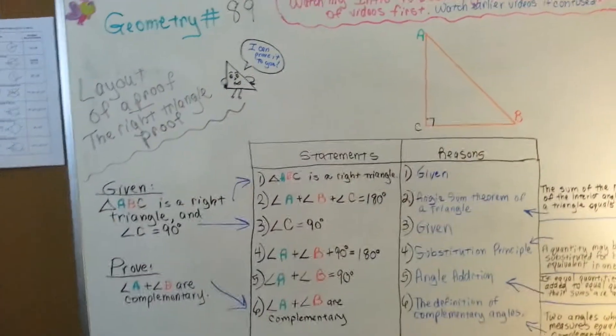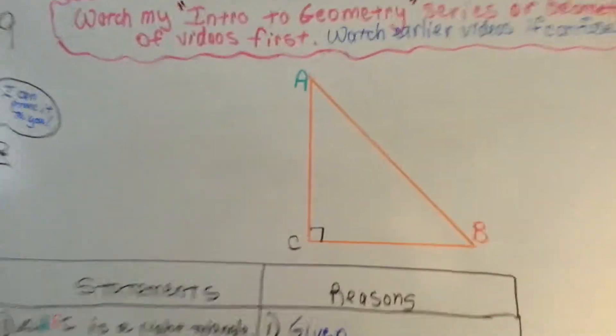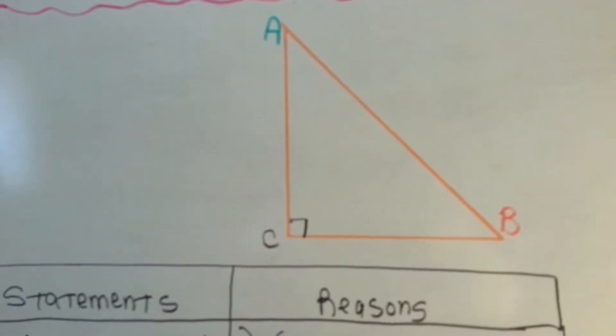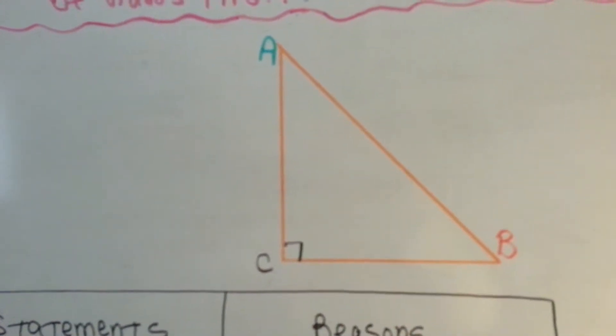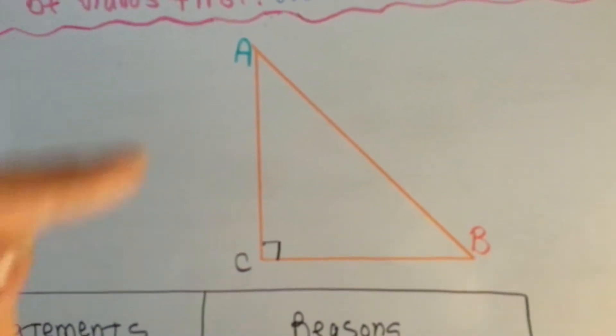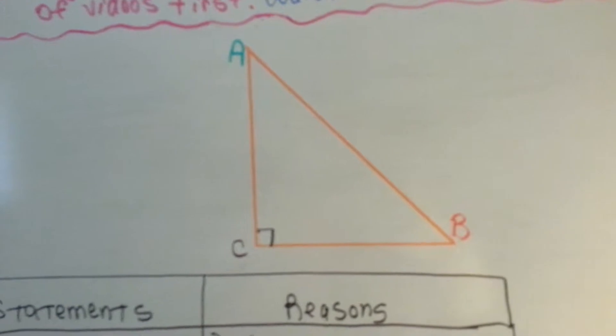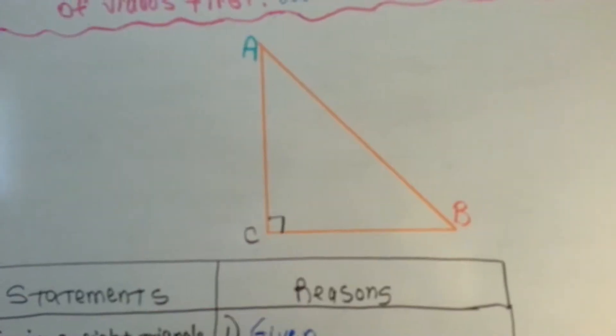So let's take a closer look at the drawing. What I've done is I've color-coded the angles to make the proof table a little easier to understand. So angle A is green, angle B is red, and angle C is brown.